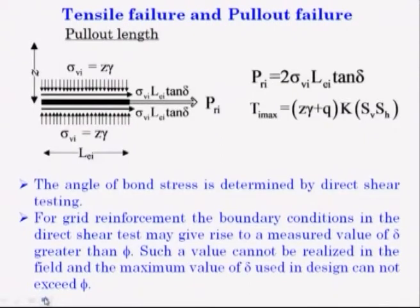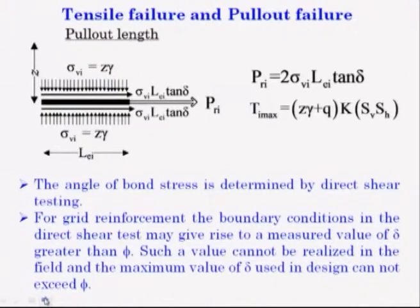The interface friction angle delta is determined by direct shear test. How do you find out delta? It is the coefficient of friction between the soil and this material. In a shear box test, at the bottom you put soil, above it you put the reinforcing material, and from there you get the value of delta: sigma_V · tan(delta) = sigma_H · L_I over the length.